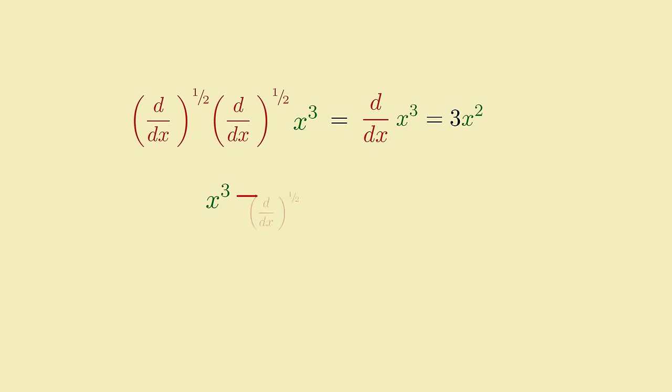Analogous to how multiplying the square root of a number by itself results in the original number. By that measure, simply reducing the exponent of a power function by one-half can't really be a proper half-derivative, because applying it twice to x cubed will yield x squared, which is close to but not quite the derivative of x cubed, because the actual derivative has a coefficient of 3. So apparently the half-derivative of x cubed must be something a bit more complicated.